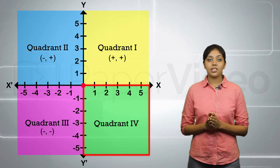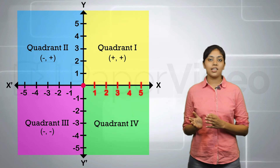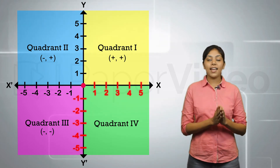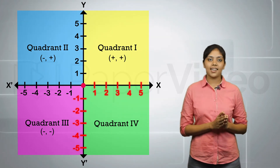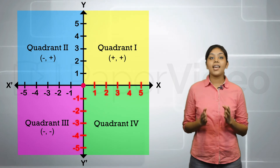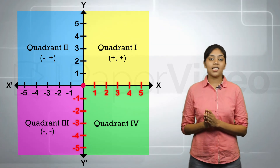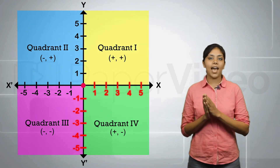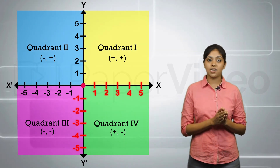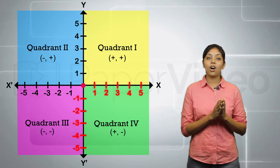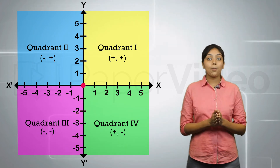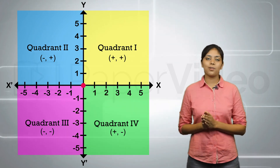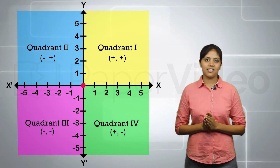In the fourth quadrant, the x-coordinate is positive but the y-coordinate is negative. This means that any point lying in the fourth quadrant will have its abscissa positive and ordinate negative. The points on the axis are not included in the quadrants.